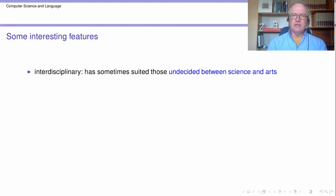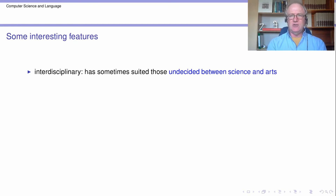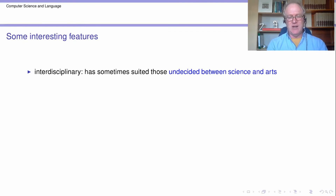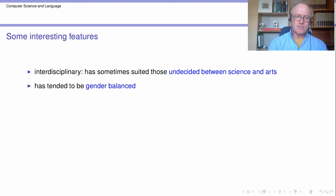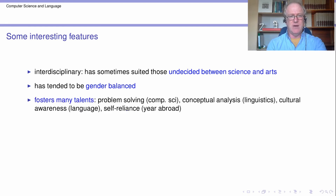Let me say some more general points. This is certainly an interdisciplinary degree — possibly the most interdisciplinary degree that Trinity has to offer. It has been appealing to students who are undecided between science and arts: if you feel you have talents in both areas and are reluctant to abandon one of them, this degree programme lives to a certain extent in both areas. The degree programme has also tended to be fairly gender balanced, possibly more so than some other degree programmes.